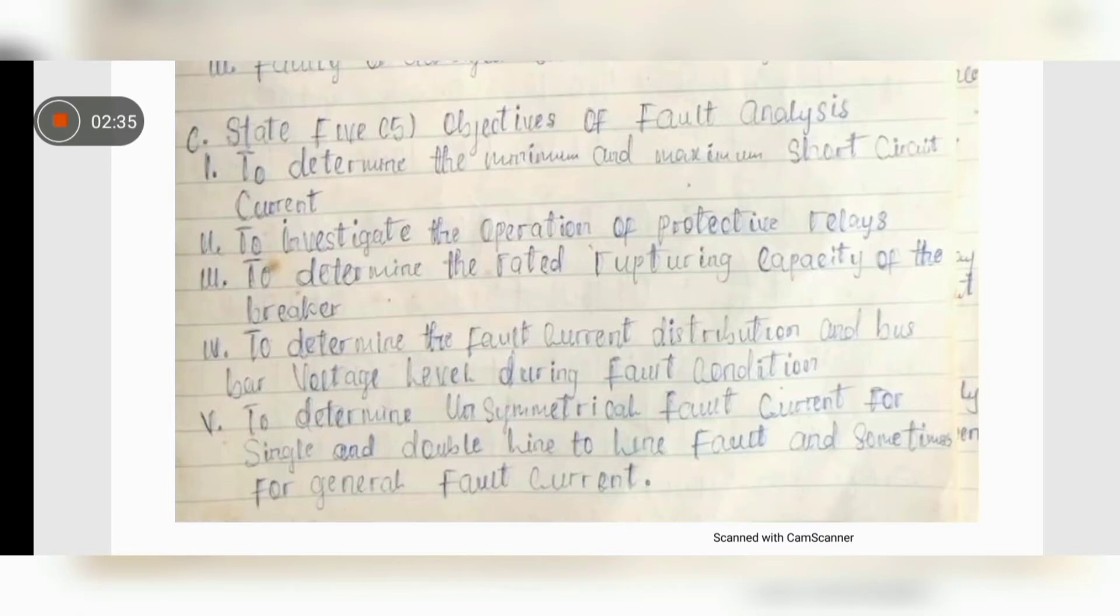We have to state five objectives of fault analysis. To determine the minimum and maximum short circuit current. To investigate the operation of protective relays. To determine the weighted rupturing capacity of the breaker. To determine the fault current distribution and bus bar voltage level during fault condition. To determine unsymmetrical fault currents for single and double line to line fault and sometimes for general fault current.